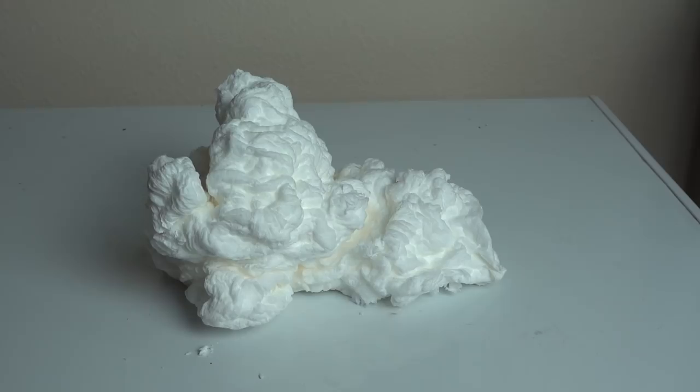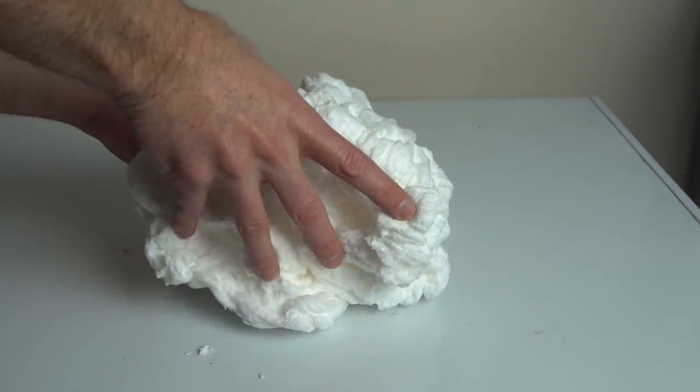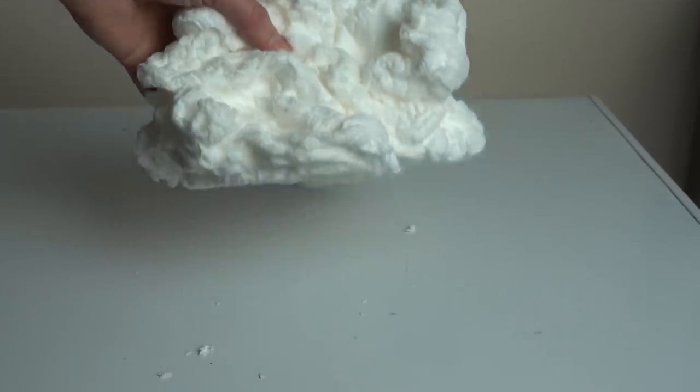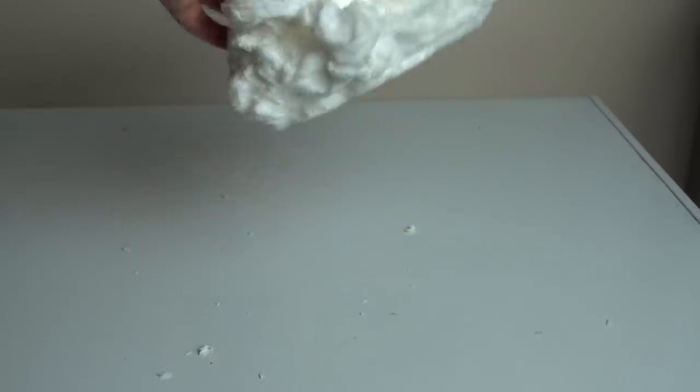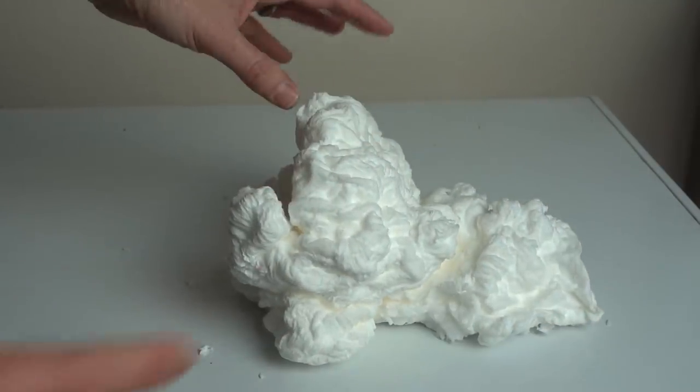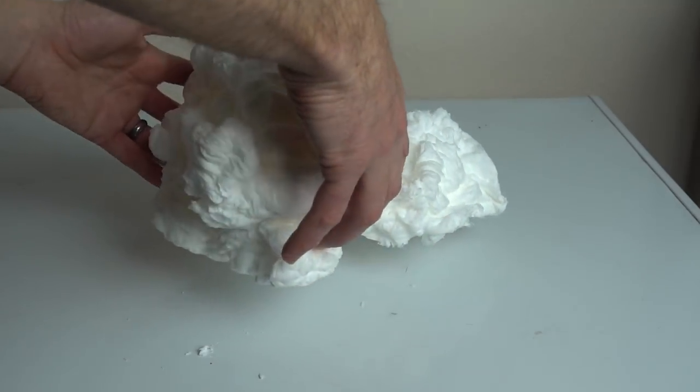Okay, so ivory soap puffs up in the microwave because first of all it has a lot of air in it, and it also has moisture. And when it heats up in the microwave, the gas expands, especially when it's under a vacuum because the pressure is lower and so it can expand faster. But overall it does seem fluffier than when I did it not in a vacuum.